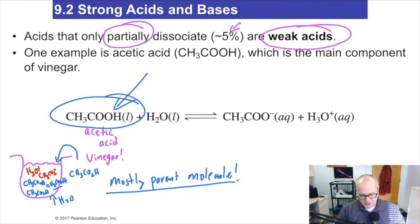So strong acid dissociates completely in water to give you anions and cations, no parent molecule. Weak acids dissociate only slightly to give you cations and anions, well hydronium and anion. But most of the parent molecule remains intact in solution. Now how do we tell?